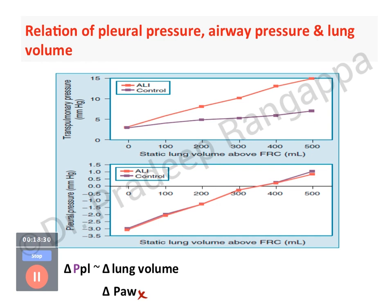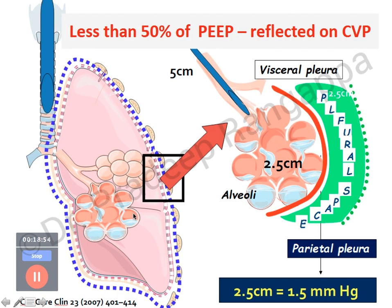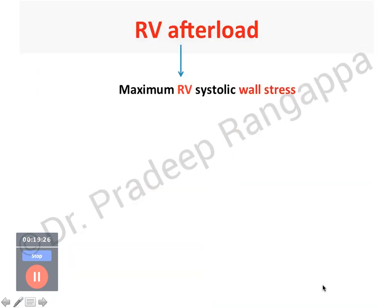The previous slides showed lung volume's detrimental effect on pulmonary vascular resistance and on pleural pressure. Regarding CVP: less than 50% of PEEP is reflected on CVP, meaning CVP is underestimated in ventilated patients. For example, if PEEP is 2.5, your CVP is reflected as approximately 1.5 mmHg. In summary: we have covered the effects of volume on PVR, the effect of lung volume on pleural pressure, transpulmonary pressure changes, and CVP underestimation.